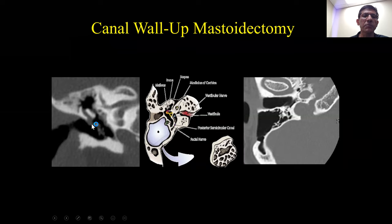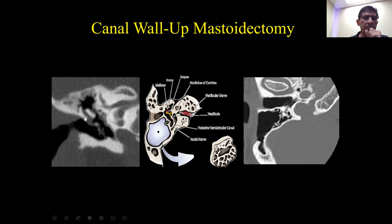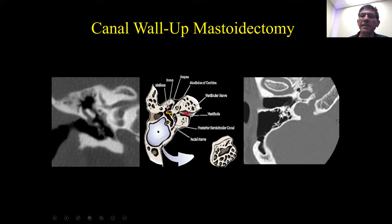Here's a small pathologically proven cholesteatoma that extended superiorly into Prussak's space. In a canal wall up mastoidectomy, typically performed for early cholesteatomas, we can see a classic mastoidectomy defect, but notice how the posterior wall of the external auditory canal is intact — otherwise known as 'up.' This is a canal wall up mastoidectomy.